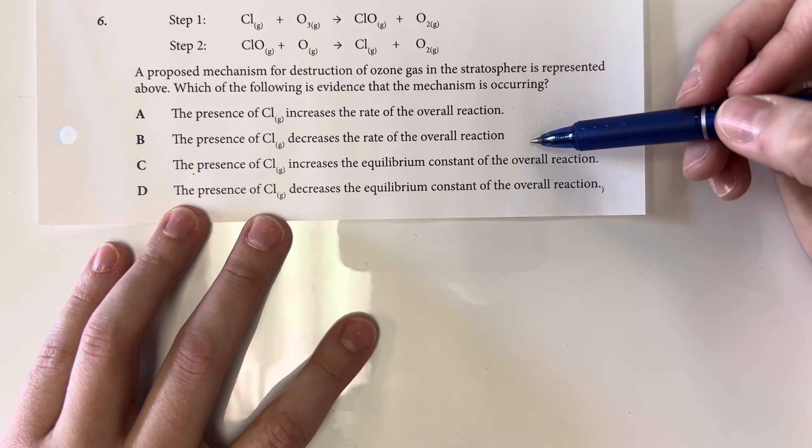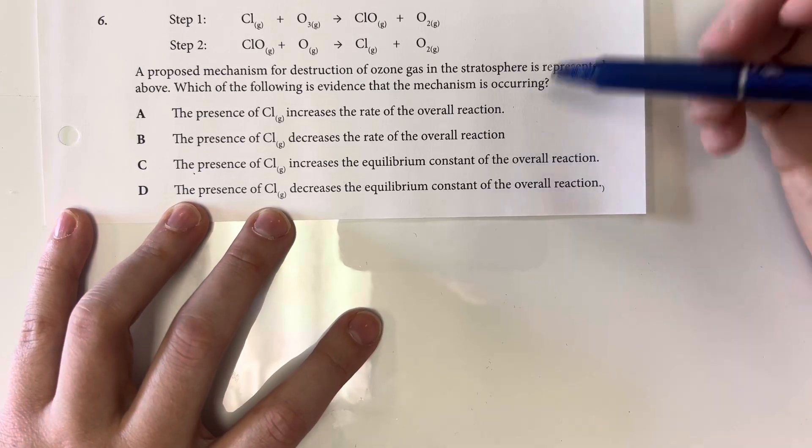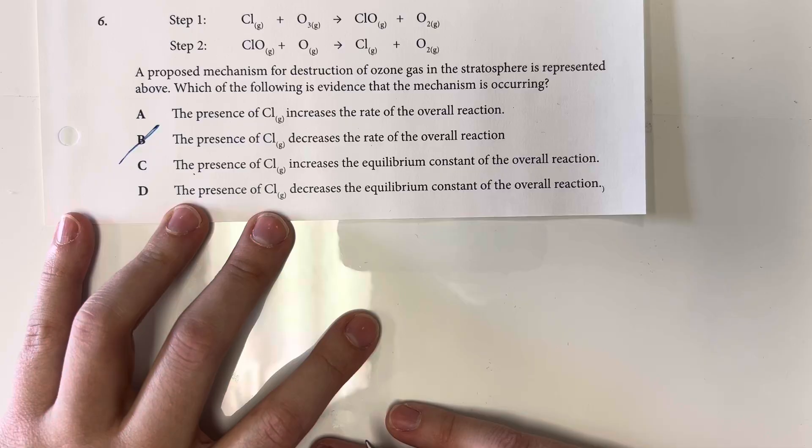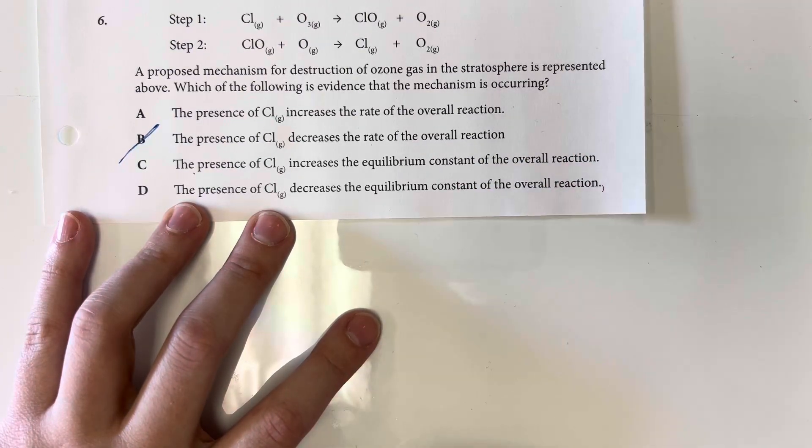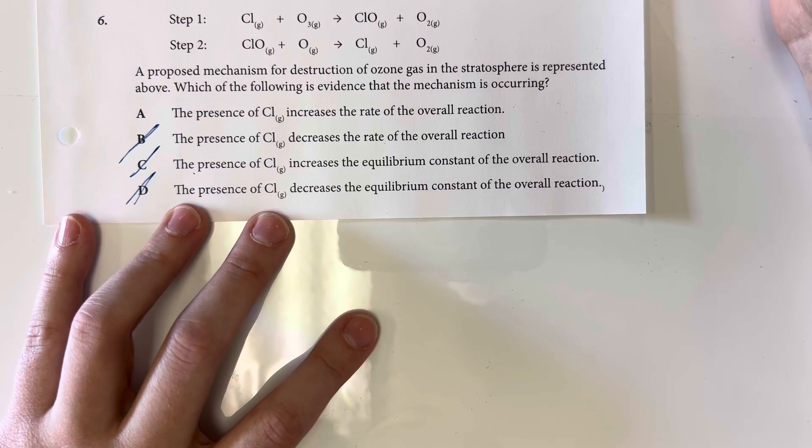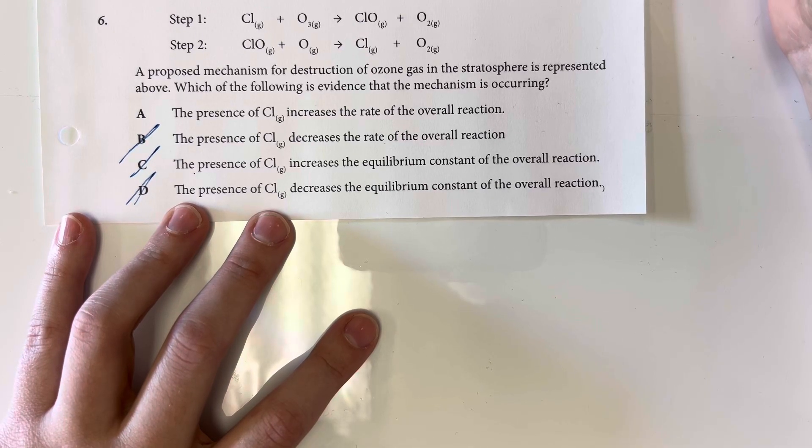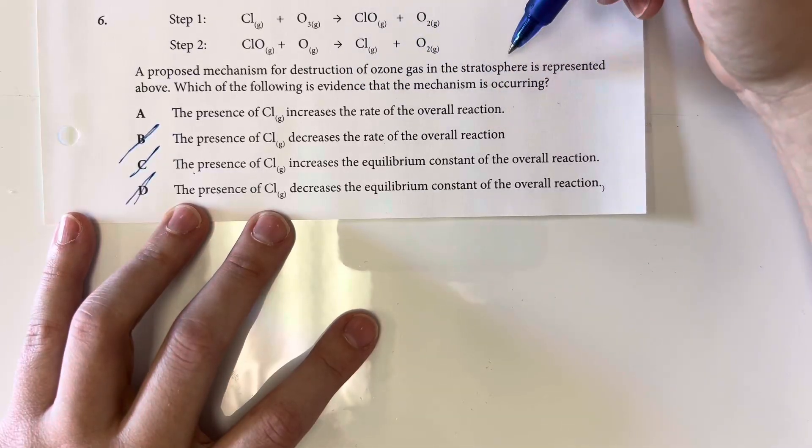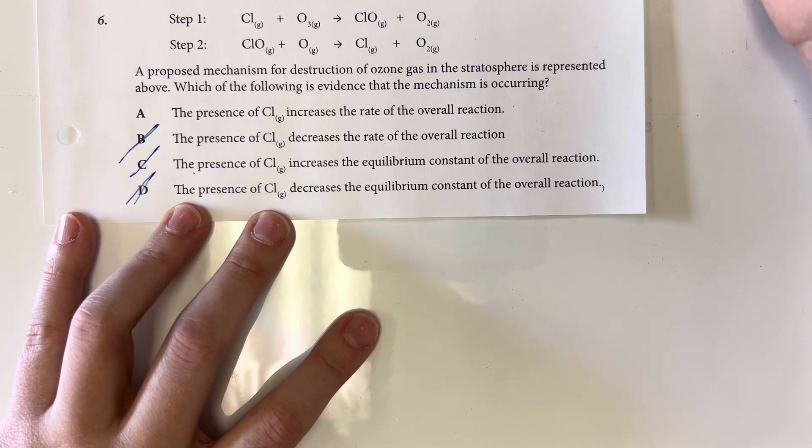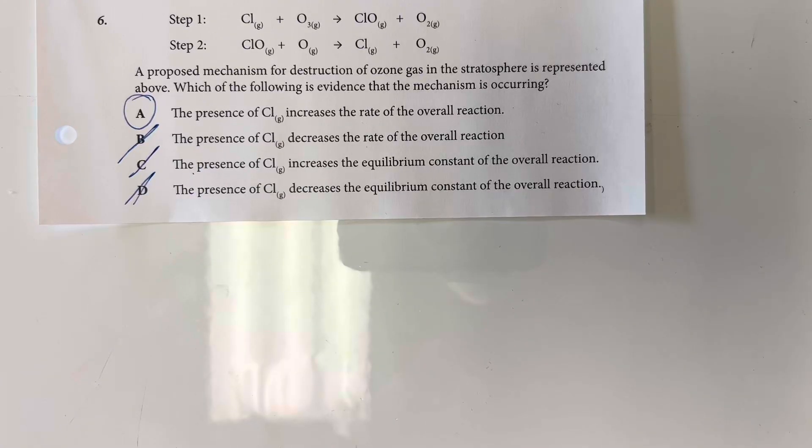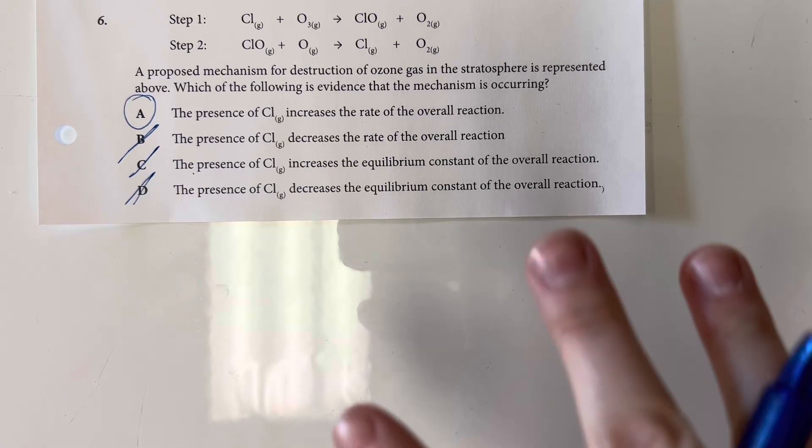The presence of chlorine decreases the rate of the overall reaction. That would be a contraindicator, meaning that doesn't seem to be doing a great job in forcing that reaction to go forward. The presence of chlorine increases the equilibrium constant for the overall reaction, or decreases the equilibrium constant for the overall reaction. Increasing or decreasing the equilibrium constant isn't going to be a great indicator that this is used, that this is definitely the thing that is happening. Instead, seeing that the chlorine is going to increase the rate of the reaction does indicate that it is acting as a catalyst and so that would be my best case scenario, my thing that is going to be my best evidence that that is a mechanism that is occurring.